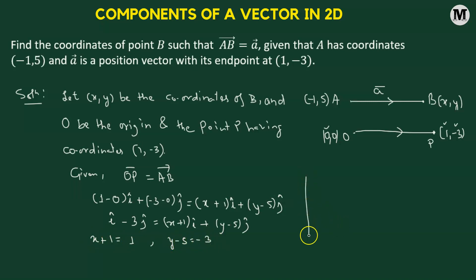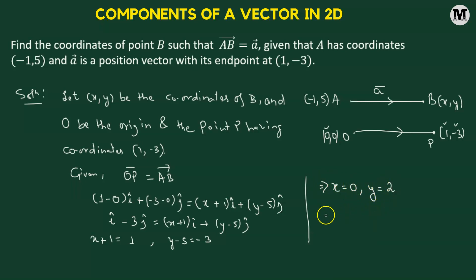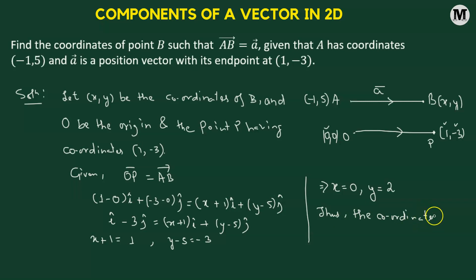Solving for x and y: x equals 0 and y equals 2. Thus we have successfully obtained the coordinates of point B. The coordinates of B are 0 comma 2.